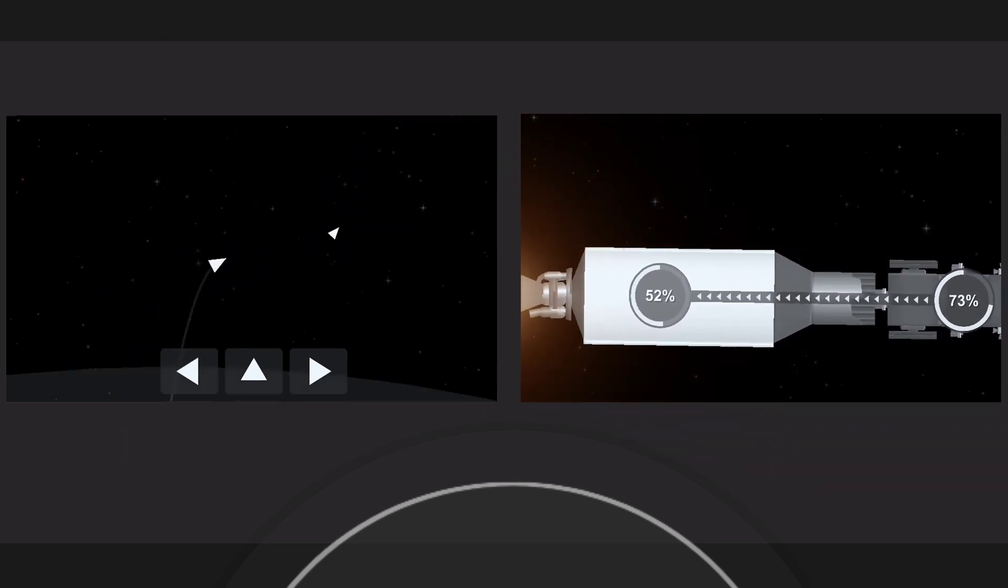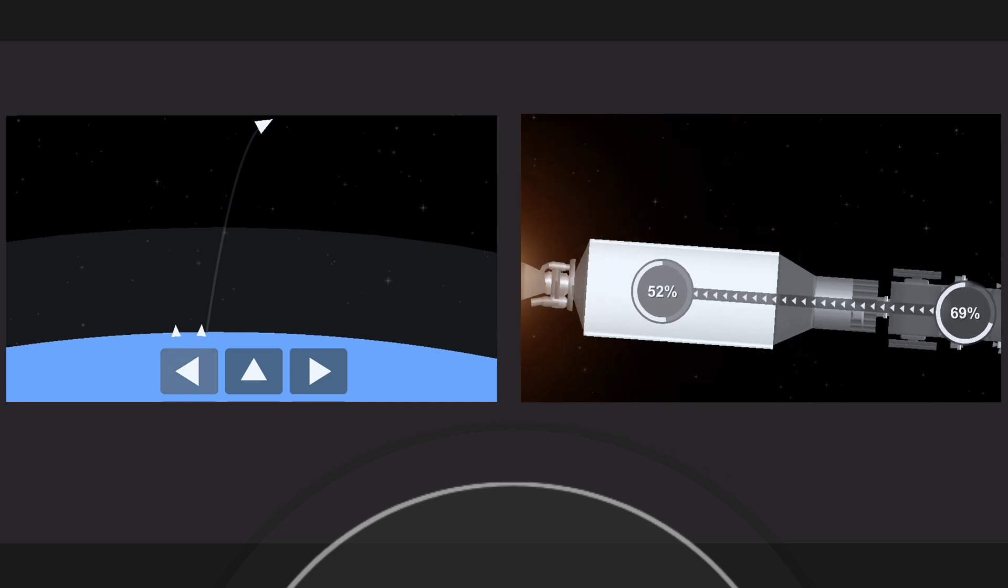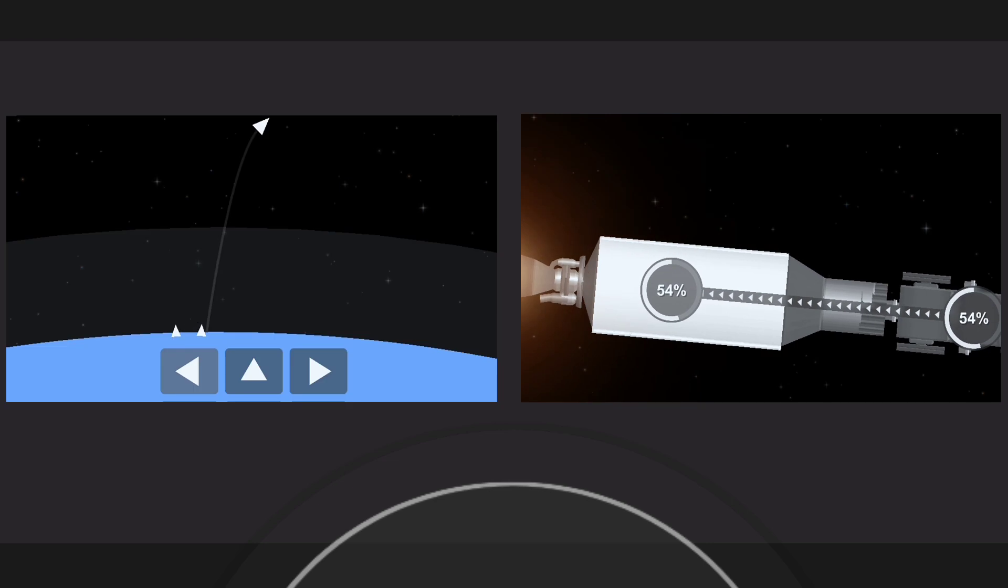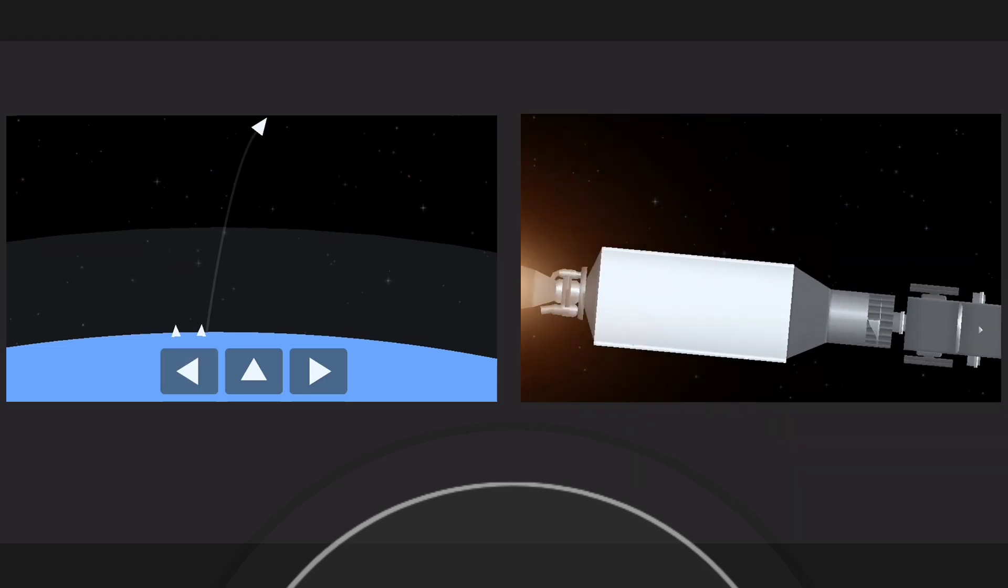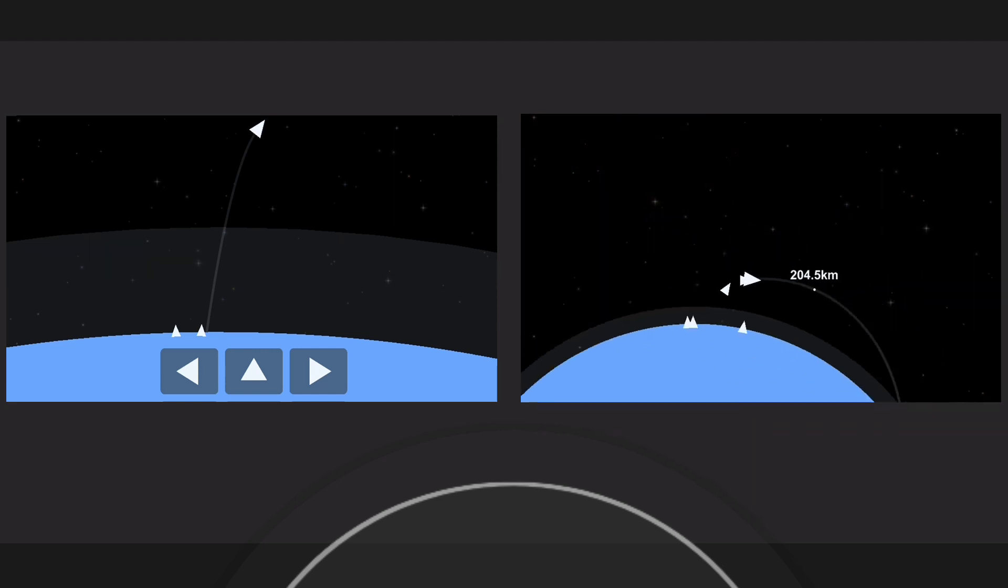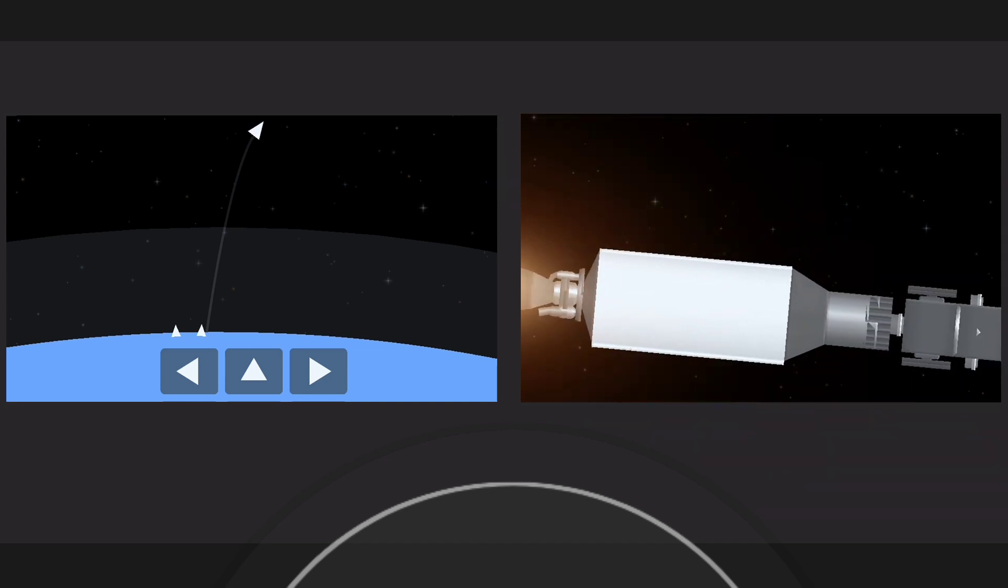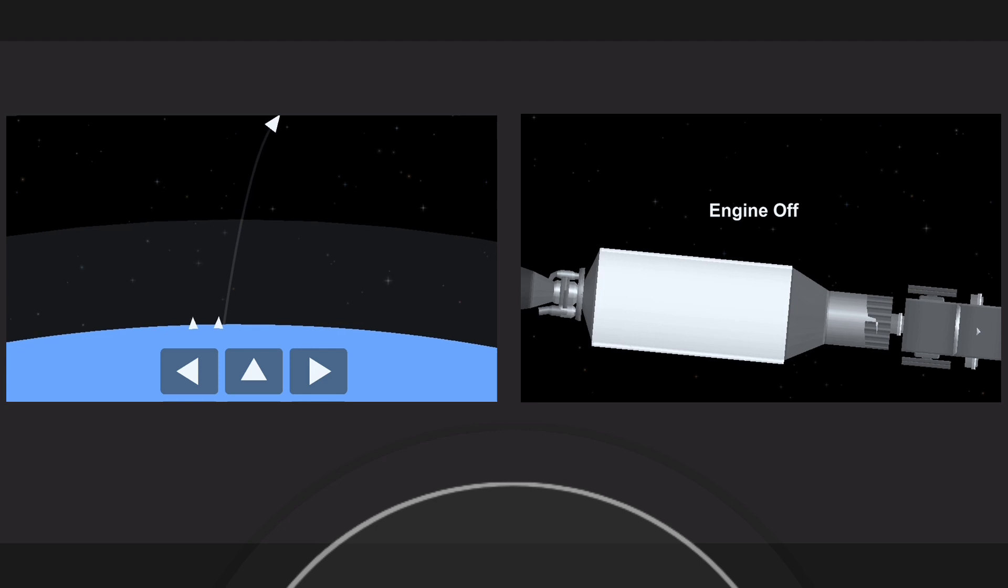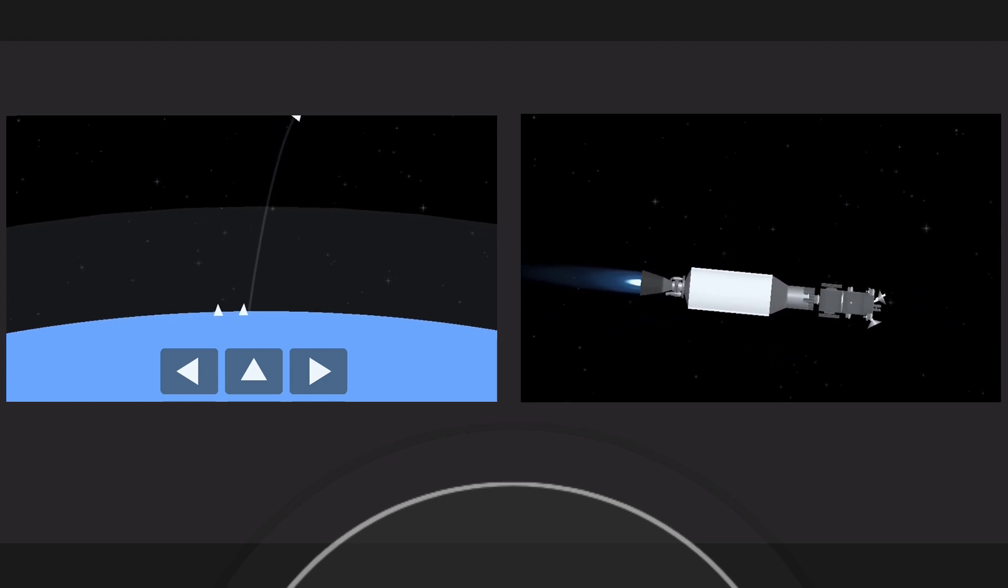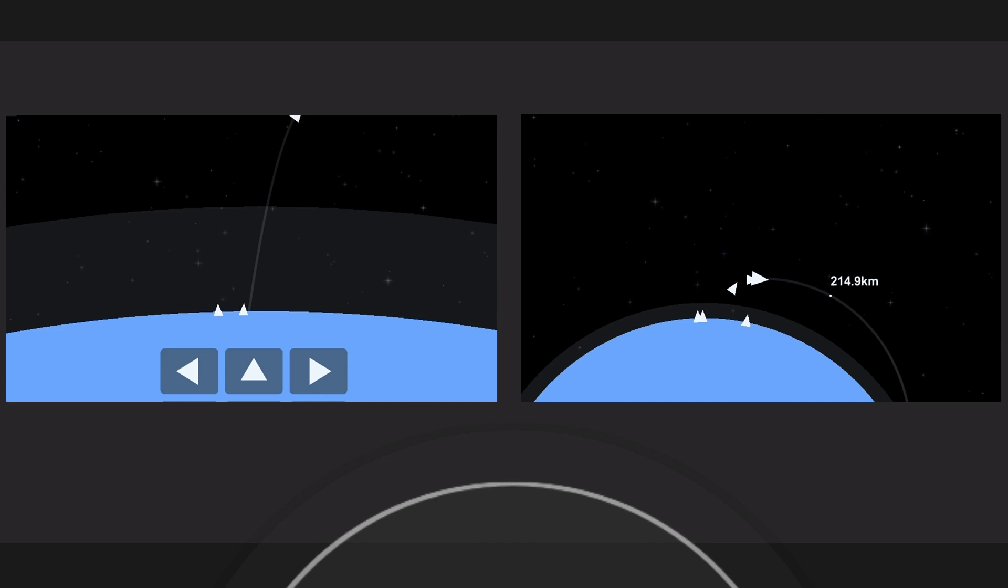On the left-hand side of your screen is a view of our first stage looking downward. It's continuing to fall back towards Earth. The next milestone for the first stage is its first stage entry burn. Falcon 9 needs to execute an entry burn to slow itself down before hitting the dense parts of the atmosphere. Without this second burn, relying on the atmosphere alone to slow Falcon 9 down would put unnecessary strain on the rocket. That entry burn is coming up at T-plus 6 minutes and 10 seconds.